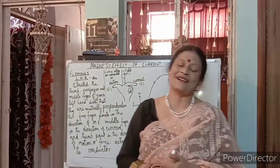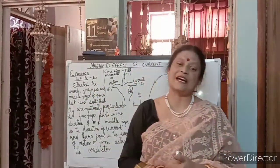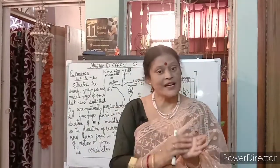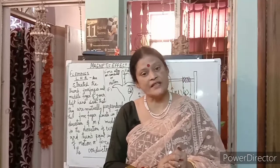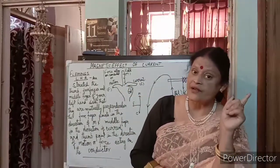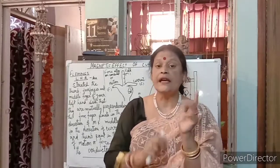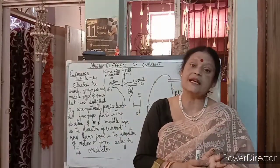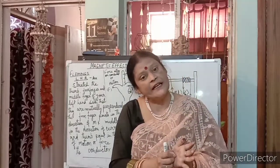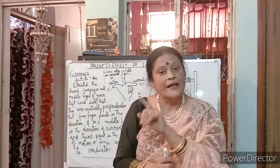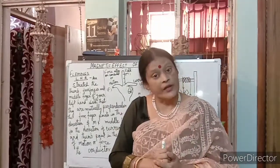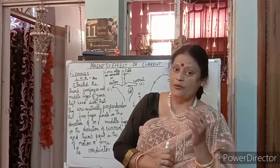Hello 10th class, welcome back. Today I'll continue with the chapter on magnetism in physics. I have already covered two topics: Maxwell's right-hand rule and solenoid. Maxwell's right-hand rule gives the relationship between current and magnetic field — if current flows, magnetic field is produced. I explained that well. And solenoid — you know what that is.